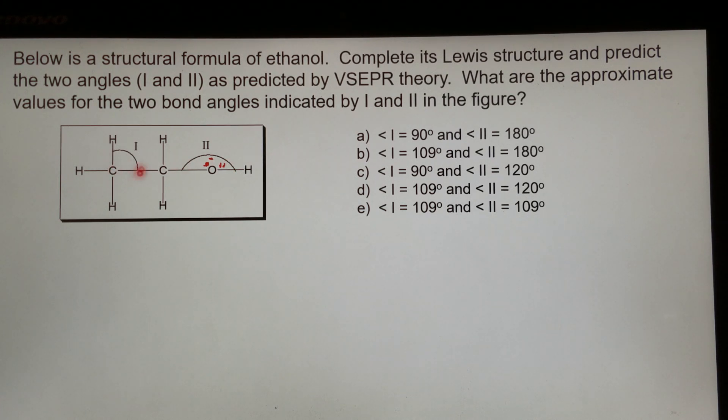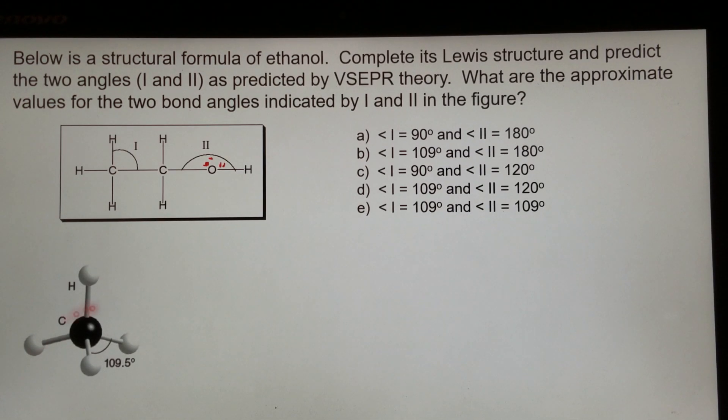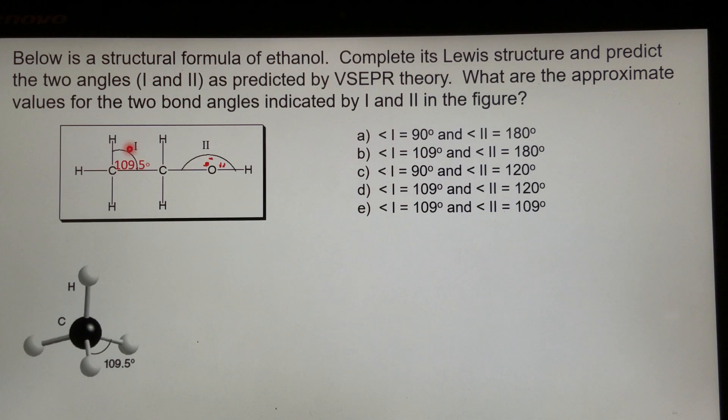Because tetrahedral looks like this. So this is how tetrahedral looks like. It does not look like this, 90 degrees each. So between each adjacent bond, the bond angle is 109.5 degrees. So between these two, 109.5, between these two, 109.5, between these two, 109.5. Therefore angle one is 109.5 degrees.